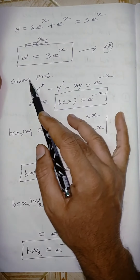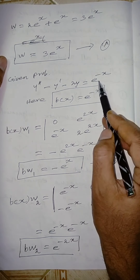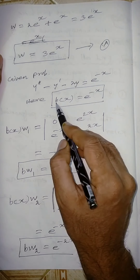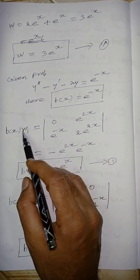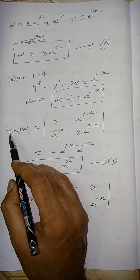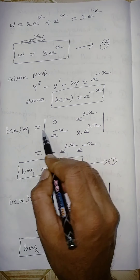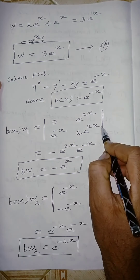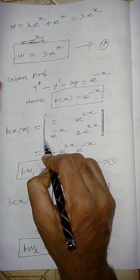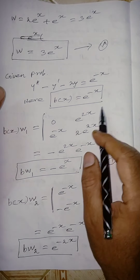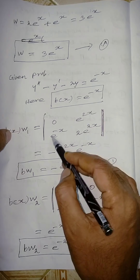The given equation is y'' − y' − 2y = e^(−x), so b(x) = e^(−x). To find the particular solution we use the Cramer's rule method. We replace the first column of the Wronskian matrix with [0; b(x)] = [0; e^(−x)].